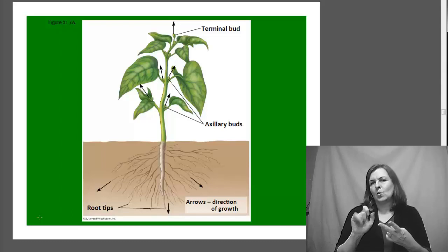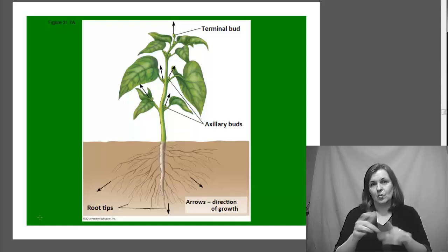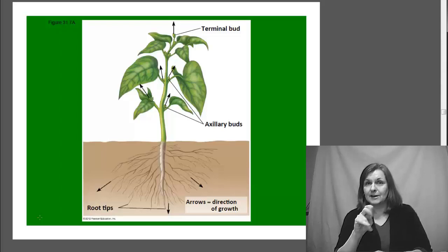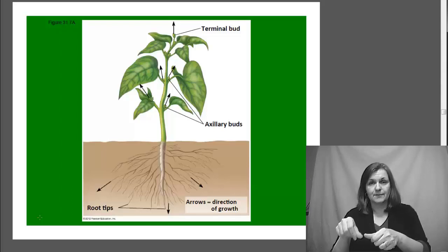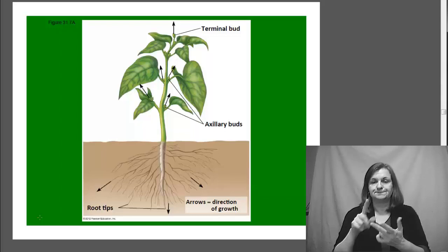Biennials, on the other hand, actually have to take two years to complete their life cycle. A common one that you might not know as being a biennial is actually a carrot. To go through its entire life cycle, growth, flowering, reproduction, and seed production takes two years.